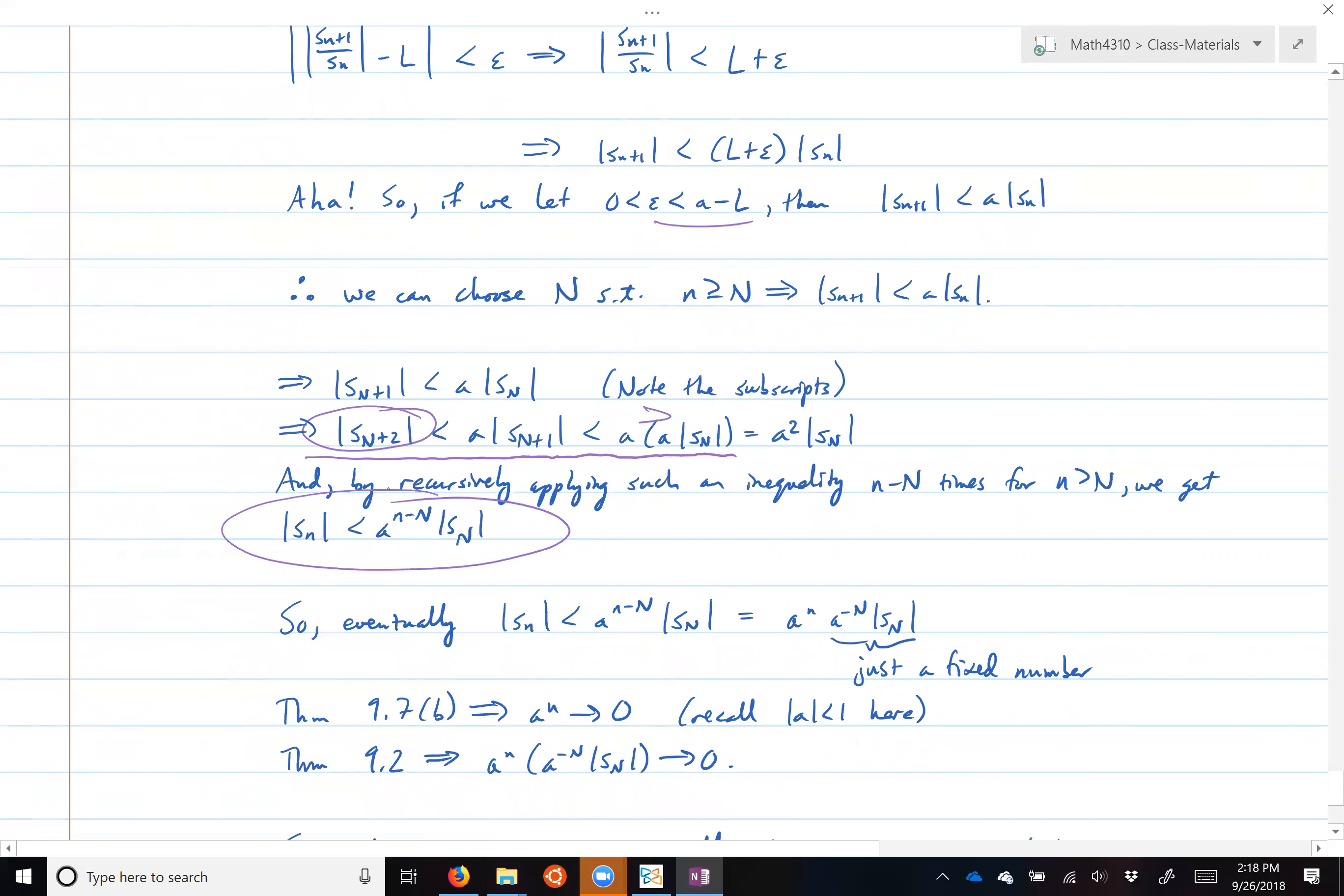And so you just do this recursively to actually see the relationship that's given in the hint. If I take n strictly greater than capital N, then n minus capital N, like n plus 2 minus n gives me 2, I'm just going to have |S_n| is less than A to the (n minus N) power times this S_N term. It's just a recursive relationship.